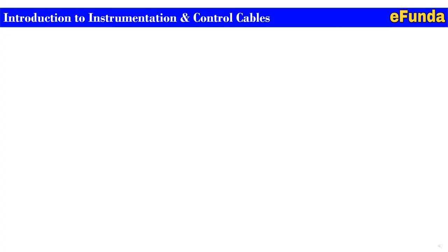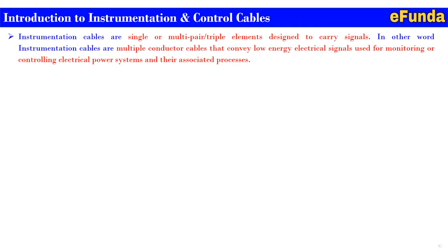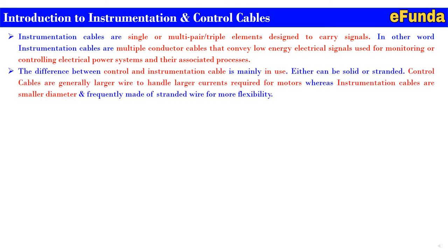Introduction to instrumentation and control cable. A cable is a thick wire or a group of wires inside a rubber or plastic covering which is used to carry electricity or electronic signals. The definition of a cable means a rope-like bunch of wires used to connect two things. Instrumentation cables are single or multi-pair triple element designed to carry signals. In other words, instrumentation cables are multiple conductor cables that convey low energy electrical signals used for monitoring or controlling electrical power systems. The difference between control and instrumentation cable is mainly in their use. Control cables are generally larger wire to handle larger current required for motors, whereas instrumentation cables are smaller diameter.